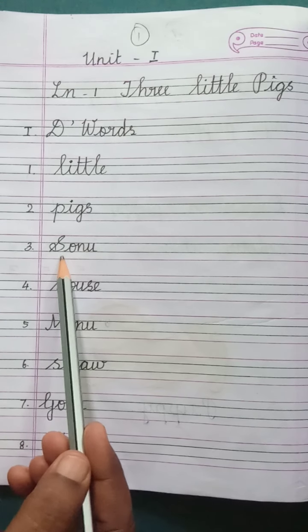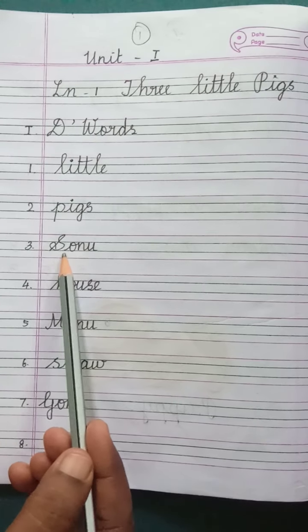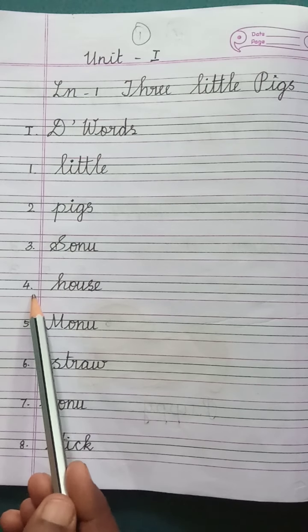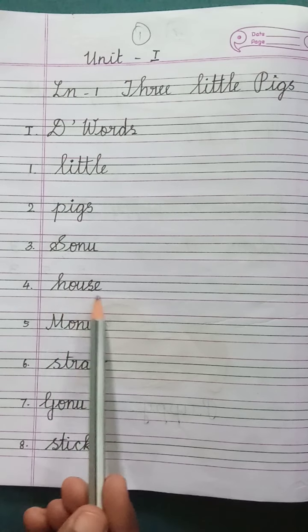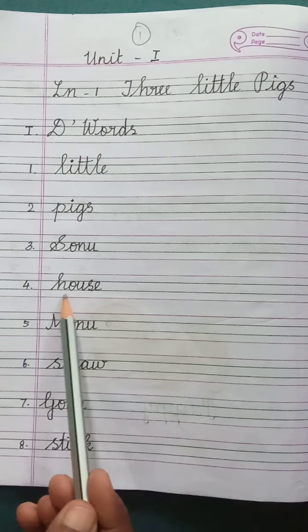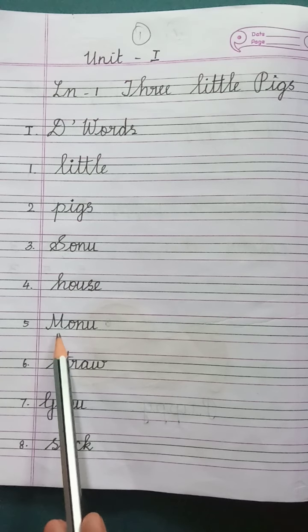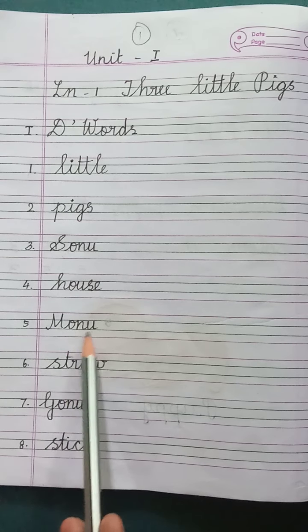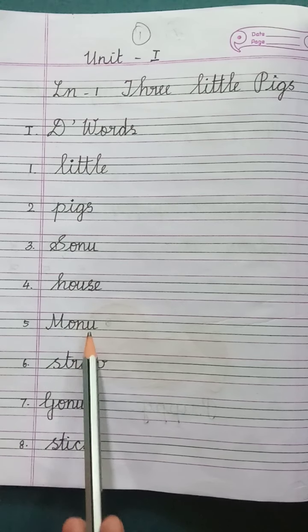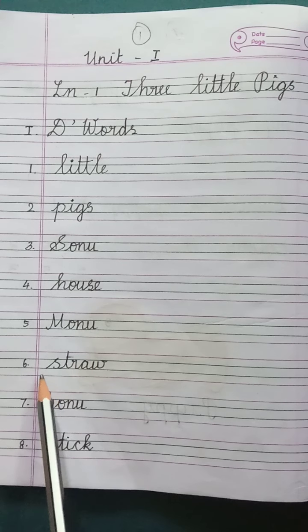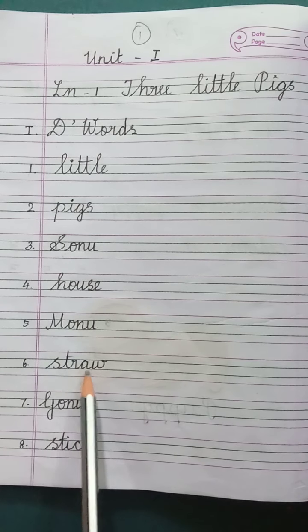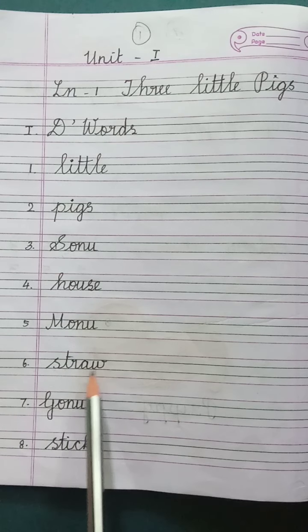Number 3: Sonu. S-O-N-U, Sonu. Number 4: House. H-O-U-S-E, House. Number 5: Monu. M-O-N-U, Monu. Number 6: Straw. S-T-R-A-W, Straw.